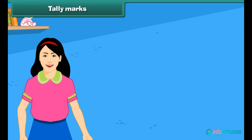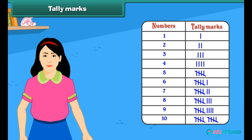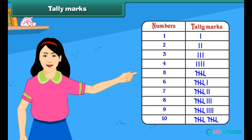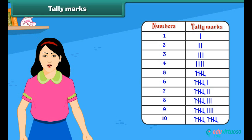Tally marks are one of the easiest and quickest methods used for data handling. A tally mark is counting objects or activities in groups of 5. A single vertical line represents a single object. For representing 2 objects, 2 vertical lines are drawn. Each mark represents an object.